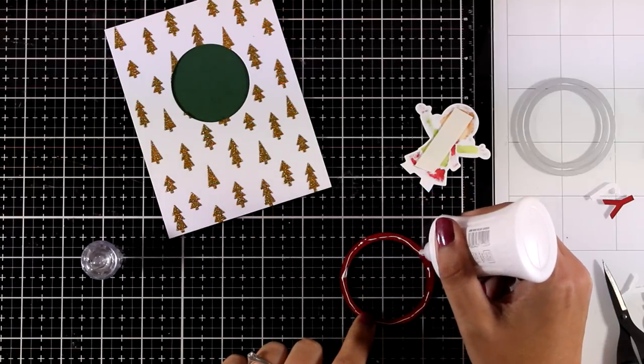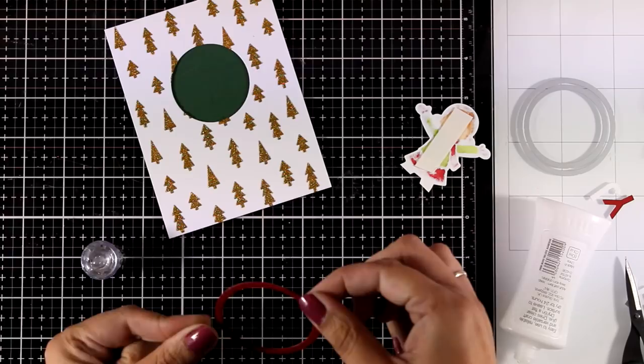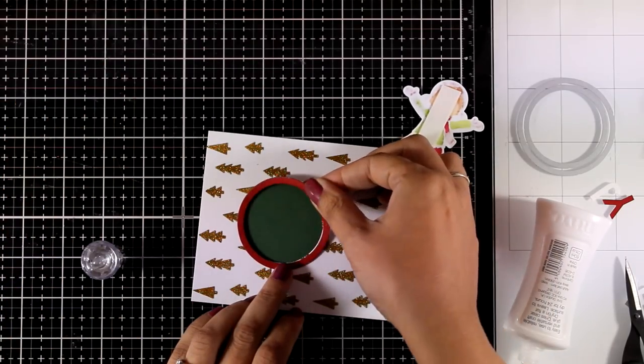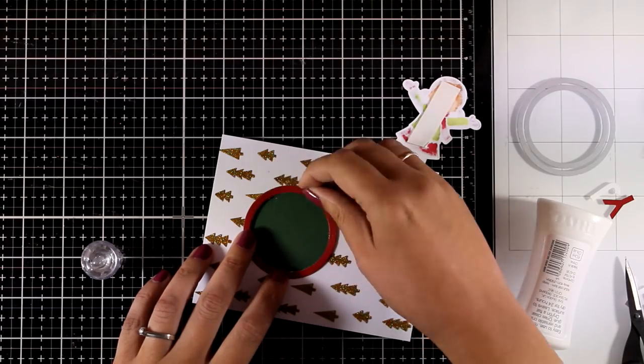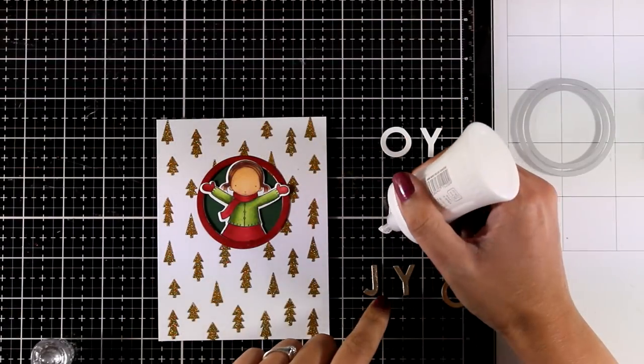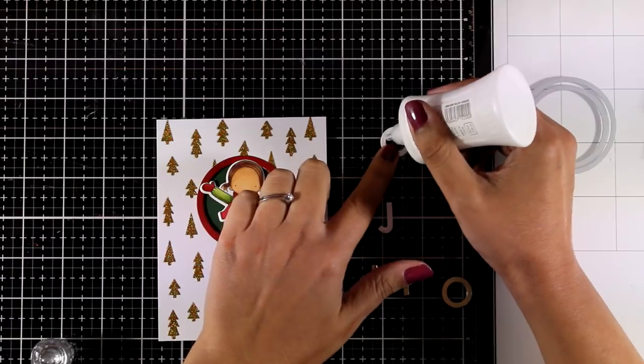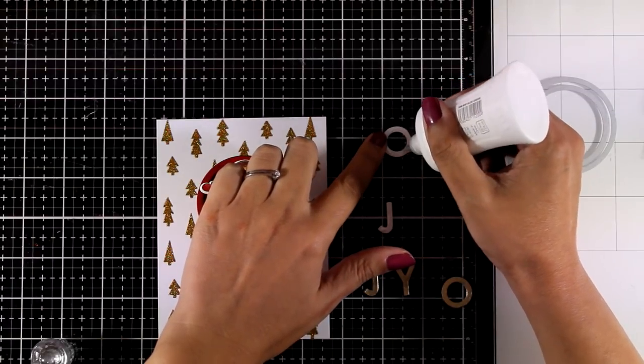Before I stick her down I'm going to stick down the ring. For that I'm using my Nuvo Deluxe Glue at the back and then I'm going to stick it there. This is going to define the window better and it's going to give it a finished look. Then I placed the little girl inside the window by using some foam tape at the back. That gives her some dimension.